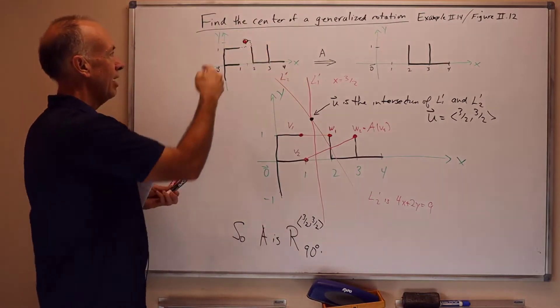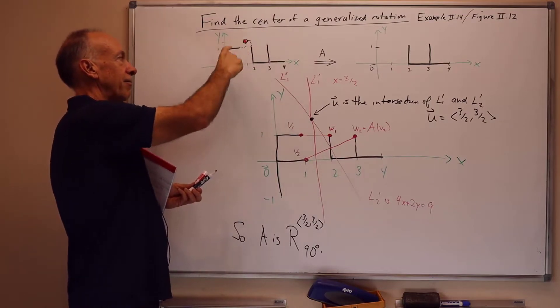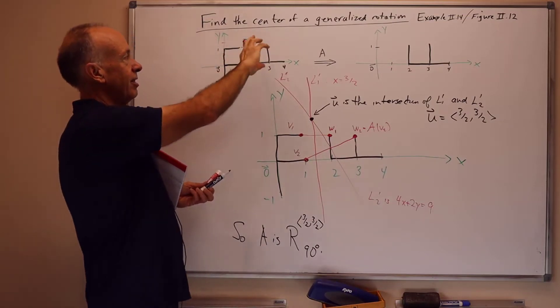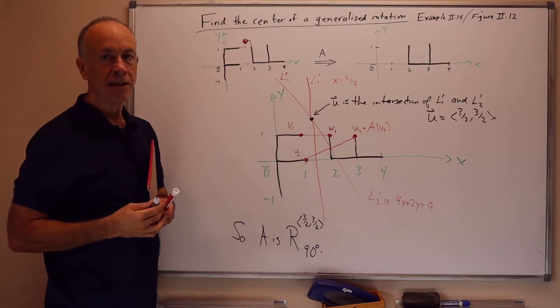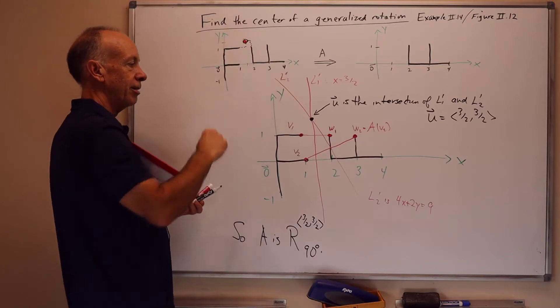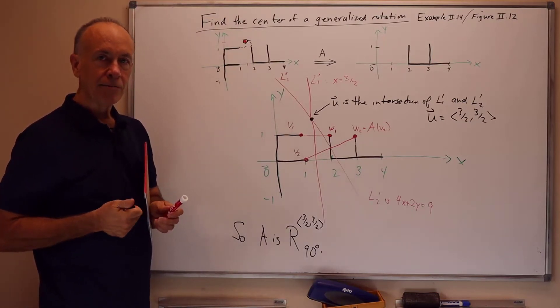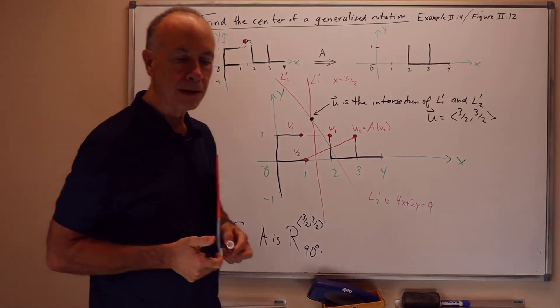Right? If we held that red dot fixed and rotated the original f 90 degrees counterclockwise, you can just see by the rigidity of the motion that you would land on top of the target f. So it's a way to verify when you're done that you've got the correct answer. So that's everything for this presentation. Thank you very much.